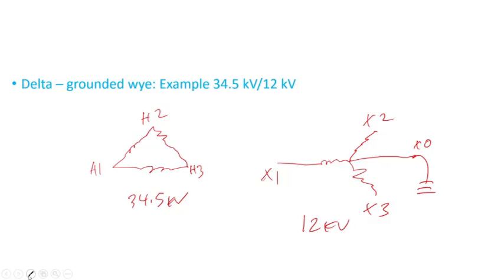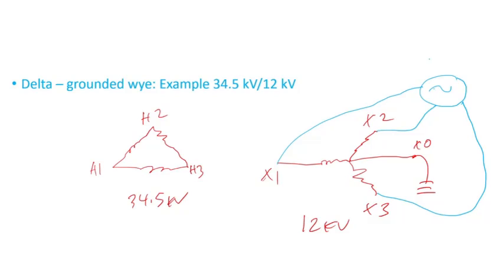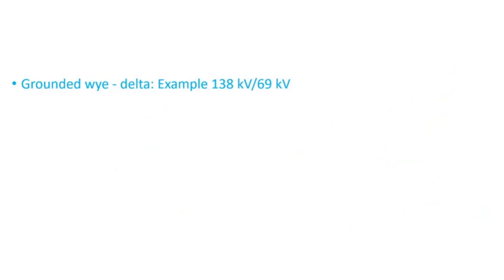To perform the induced voltage test on this delta grounded-Y transformer, you connect terminals X1, X2, X3 to a three-phase voltage source — applying voltage to the 12 kV low voltage side. The high voltage side terminals remain open; you don't do anything to them. That's how you connect the transformer for the induced voltage test in this configuration.